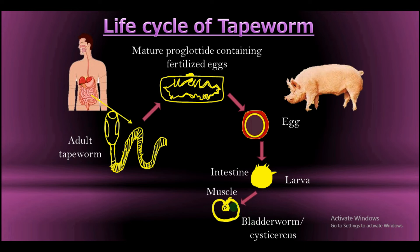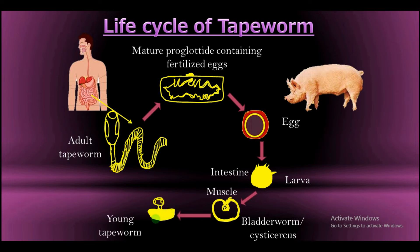When man eats an undercooked pork meat which is infected with this bladderworm, the bladderworm is automatically taken into the body of man. When it gets to the small intestine, the digestive enzymes of man act on it and a young tapeworm is formed. This young tapeworm, after some time, then grows into the adult tapeworm, which then attaches itself to the wall of the small intestine.